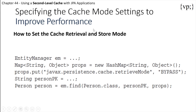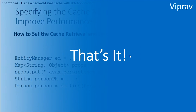Here is how you would set the cache retrieval and store mode — this is exactly what it would look like. You would get an EntityManager object, then set a map props object by creating a new HashMap, and use that props object to set the retrieve mode — in this case BYPASS. Then create a person primary key, find the person using the primary key, and pass in the props object.